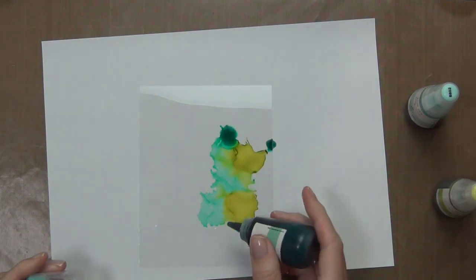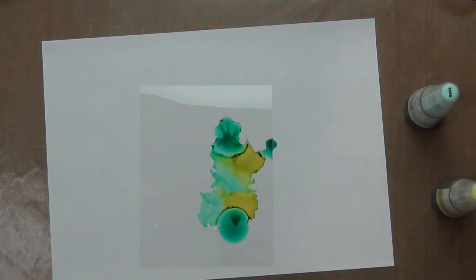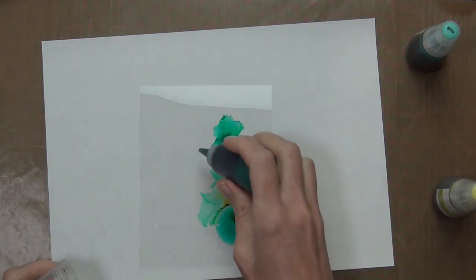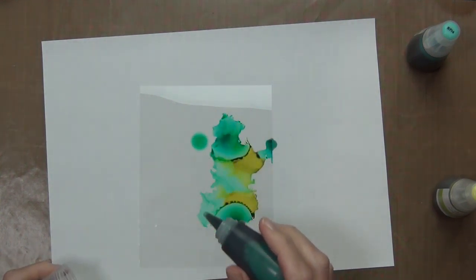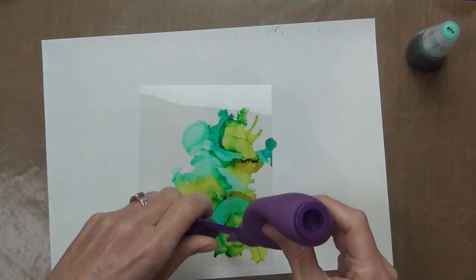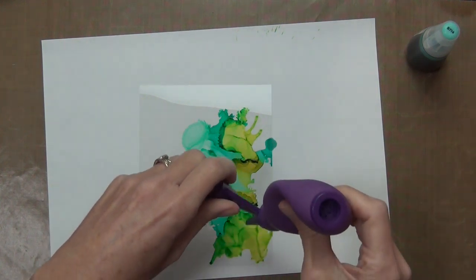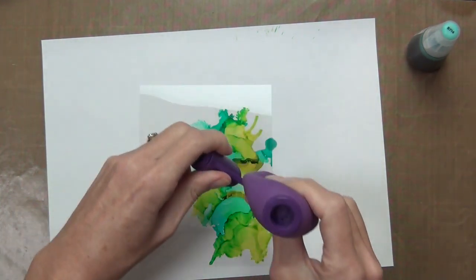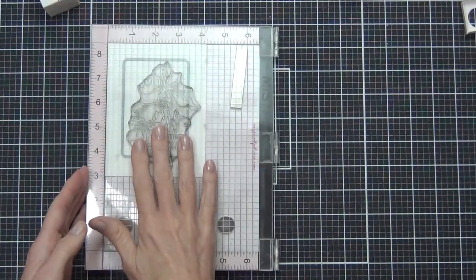creating this background—well, it's not actually going to be a background, but you'll see what I mean in a minute. So I just treated it like I would any normal alcohol ink background. I used the blower to move the color around, basically just kept dropping color on. I didn't use any blending solution here today.